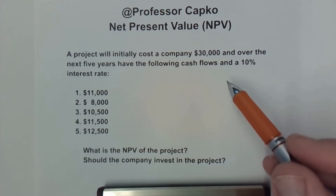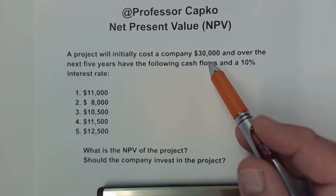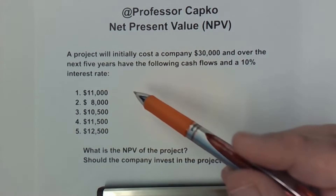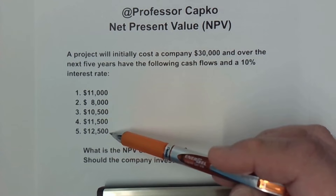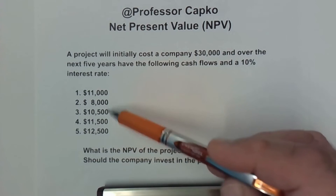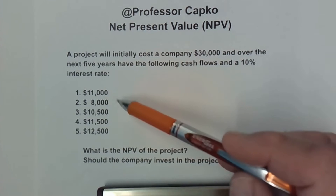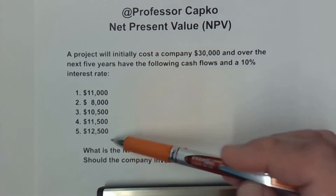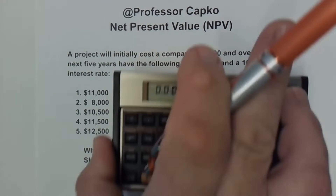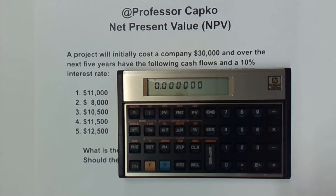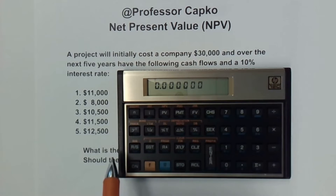So the net present value — what we're looking at is we've got an outflow of money, in this case $30,000 to invest in a project. The project is going to generate positive cash flow for the company over the next five years. These are projected numbers that the company is trying to decide whether or not to invest in. The project you're working on may have fewer or more years; the process is going to be the same with the calculator. I'll also tell you at the end how to know whether this is a good project or not for the company.